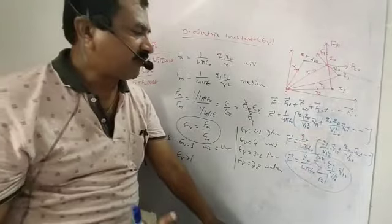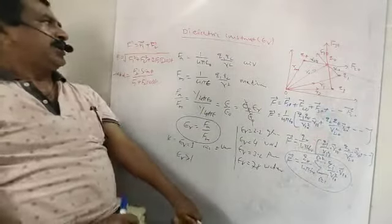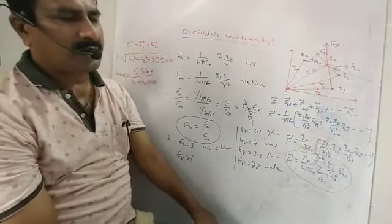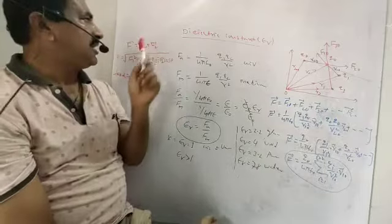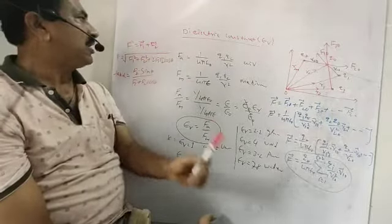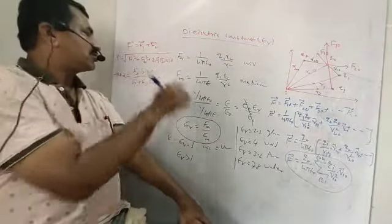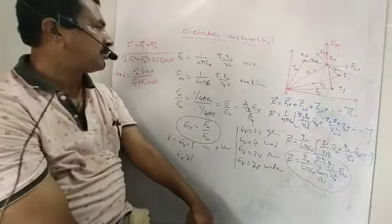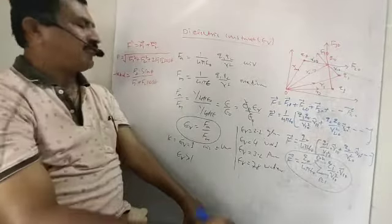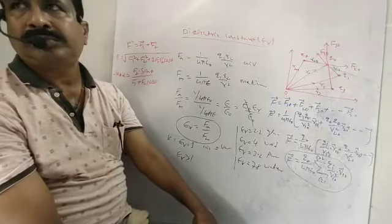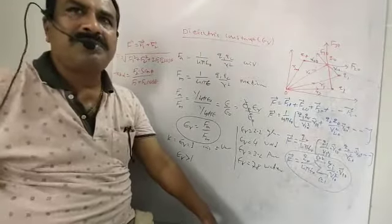This is the equation for the net force exerted on the given charge by n number of charges. When two or three charges are involved, q1 q2 give force F1 and q2 q3 give force F2. The resultant vector F equals F1 plus F2, with magnitude F equal to square root of F1 square plus F2 square plus 2 F1 F2 cos theta. The direction is given by tan alpha equals F2 sin theta divided by F1 plus F2 cos theta.